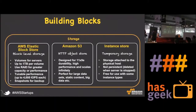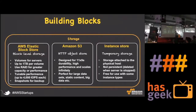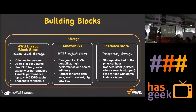For storage: Elastic Block Store is a block store — you can attach it to a compute node, format it, and start using it in ext3, ext4, etc. S3 is an object store — storage for the internet with no limit on how much data you can store. It is a Simple Storage Service with 11-nine durability. It cannot be mounted like EBS, but has huge capacity both in storage and throughput.